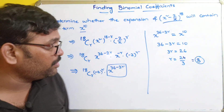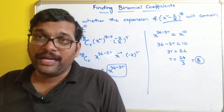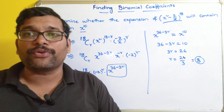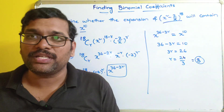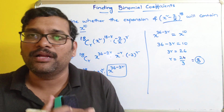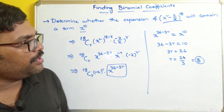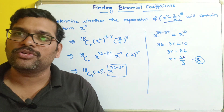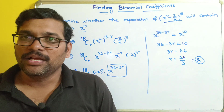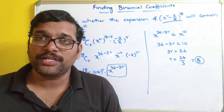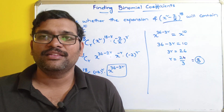So I hope you understood the session. First we saw how to find the rth term from the ending, and then we saw how to find the binomial coefficient for a particular x^n term. I will stop here. If you have any queries or doubts, feel free to post in the comment section and I will try to clarify all your doubts. If you enjoyed my session, like and share it with your friends, and don't forget to subscribe to our channel. Thanks for watching.